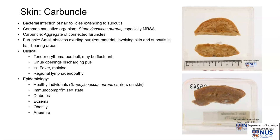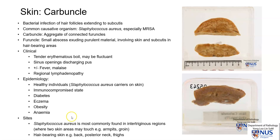Carbuncles can occur in healthy individuals, especially those who are Staphylococcus aureus carriers on the surface of the skin. They also occur with greater frequency in immunocompromised patients, patients with diabetes, underlying skin conditions such as eczema, obesity, and anemia. Common sites include the intertriginous region such as the axilla and groin, and also hair-bearing skin, especially where it is slightly thicker, such as the back, the posterior neck, or the thighs.